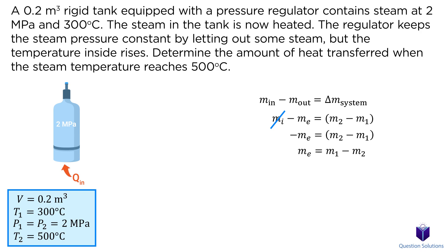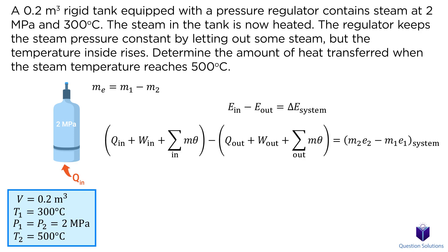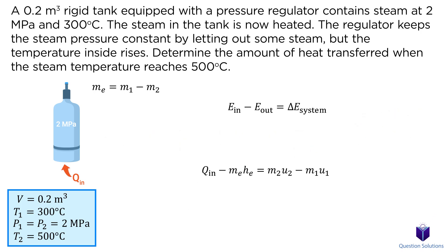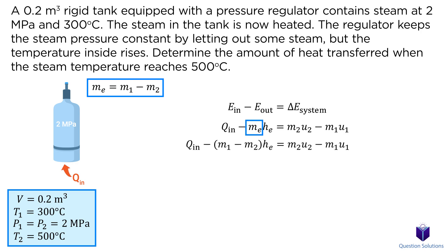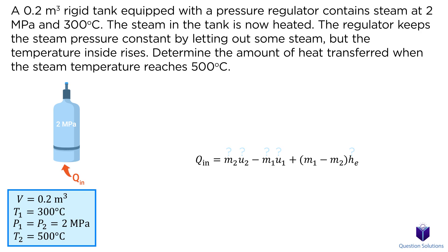Now we need to think about the energy balance of our system. Let's expand this equation to account for all the types of energy we have. In our problem, there are no work interactions, kinetic and potential energies are negligible, and no mass enters the system. There is heat input but no heat output, so our equation simplifies. We can plug in the value of exit mass from our mass balance equation and isolate the equation for heat input, since that's what we need to find.